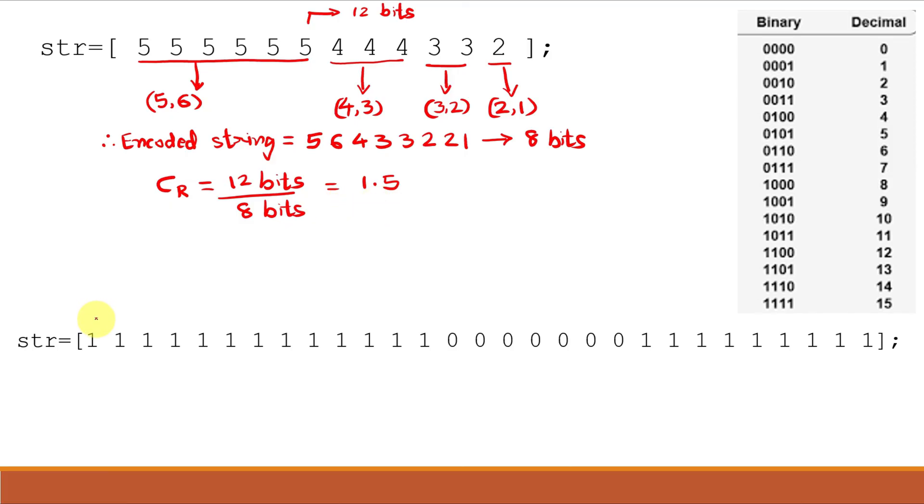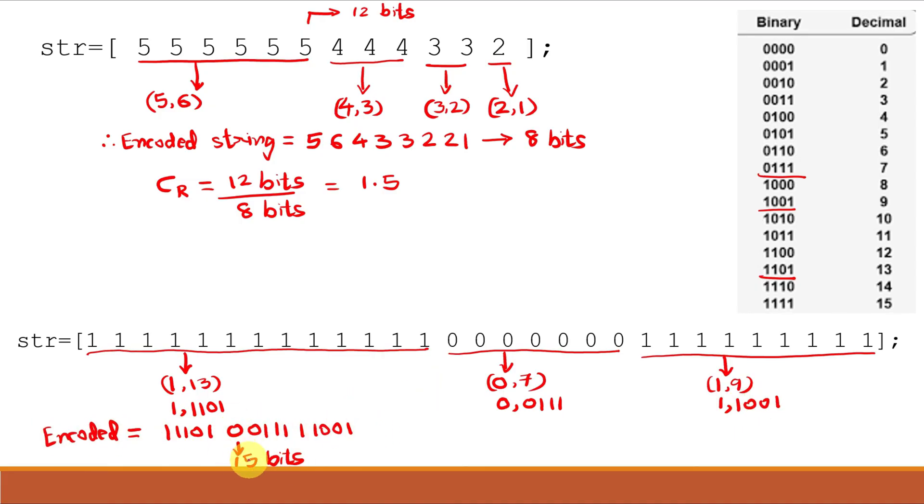Now let us understand the example for a binary bit stream or binary image. So 1 is occurring 13 times, 0 is occurring 7 times, again 1 is occurring 9 times. So what we will do, we will write these numbers in binary. So 1 and binary of 13 is 1101. We will write 1101. Similarly 0 and binary of 7. So this is 15 bits and the original string was... So the compression ratio which is very good compression that is achieved.